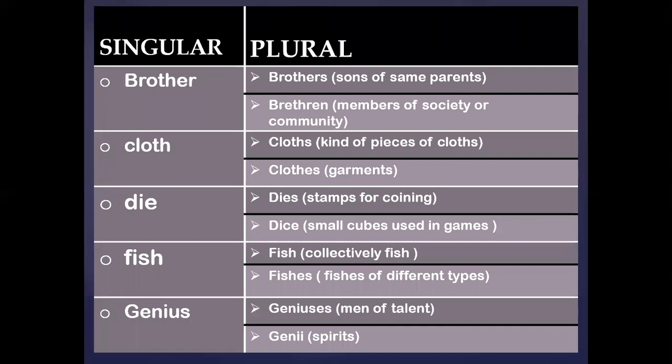There are some words which have more than one plural form. For example, 'brother' — its plurals are 'brothers', which means sons of the same parents, and 'brethren', which means members of a society or community. You can say 'I have many brothers' or 'We have brethren relationship with the people of China'.